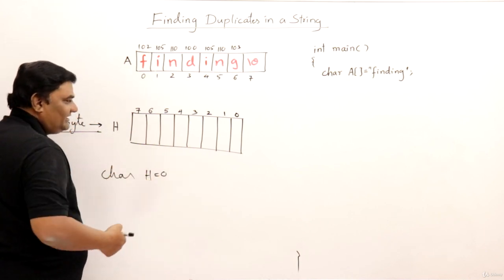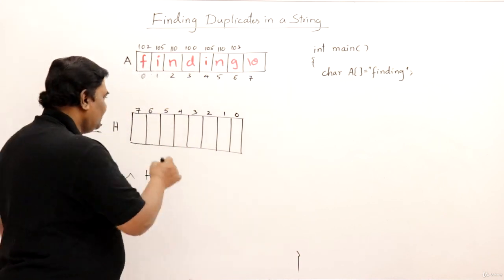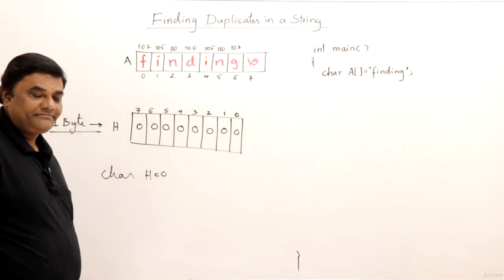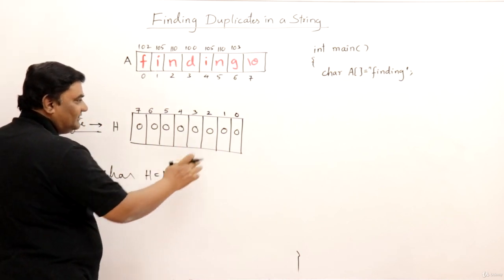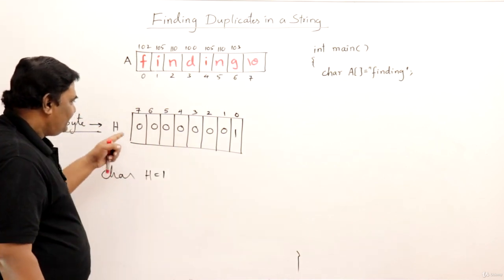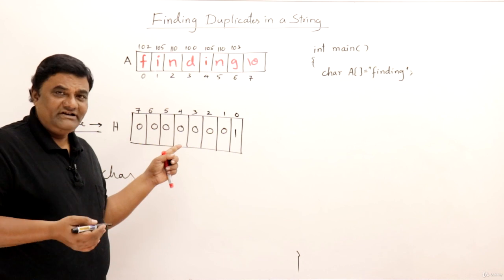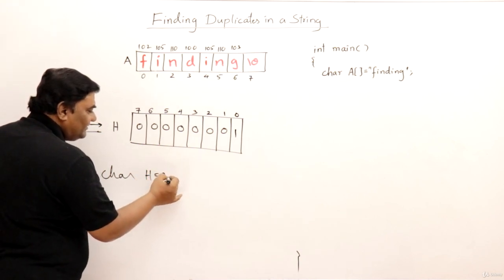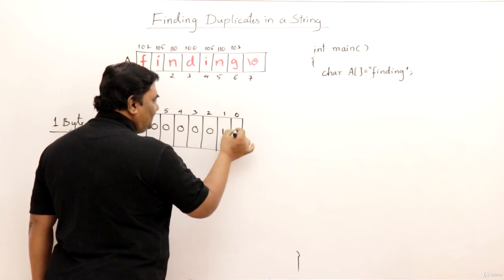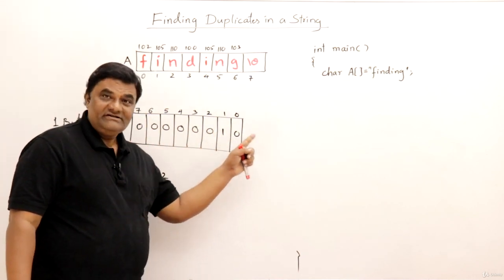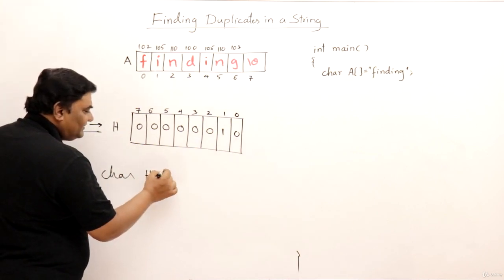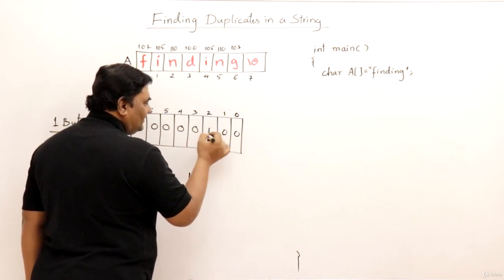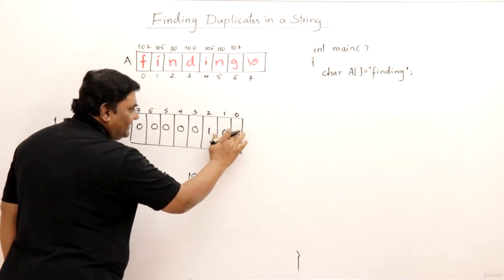If I store one, then the last bit will be one - so in memory it looks like 00000001 reading from left. If I store two, the binary form is 10, so it looks like 00000010. If I store four, the binary form of four is 100, so it will be 00000100.